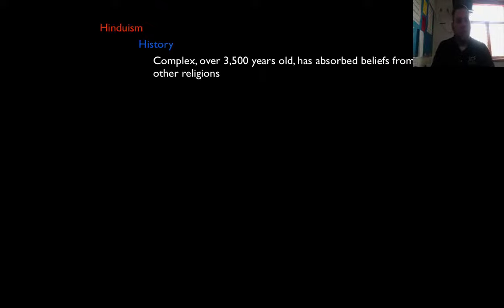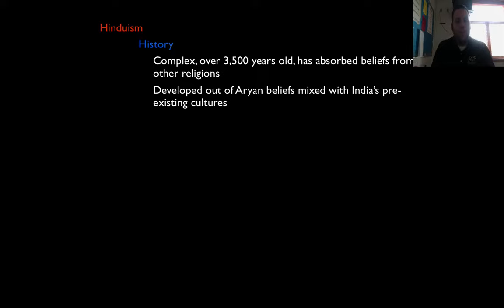Think of Hinduism as kind of like a web with Hinduism in the middle, with three main points. The first is the history — a little understanding of the history of Hinduism. It's very complex, it's more than 3,500 years old. It absorbed beliefs from other religions that existed in India at this time, and it developed out of the Aryan beliefs that mixed with India's pre-existing cultures.